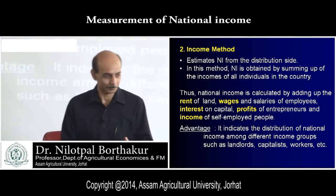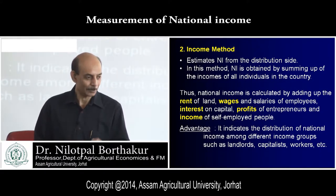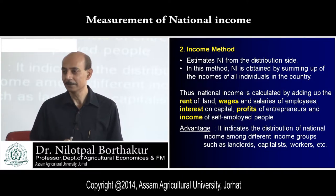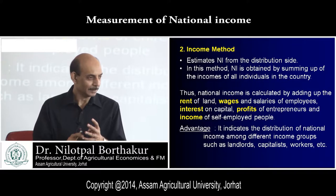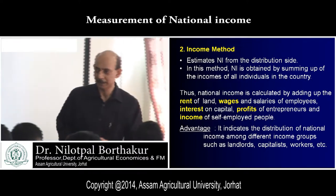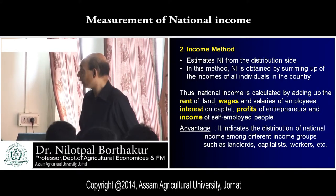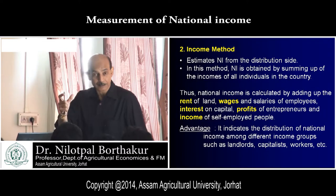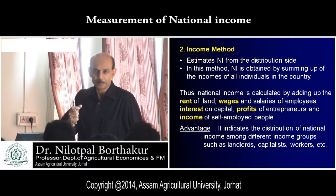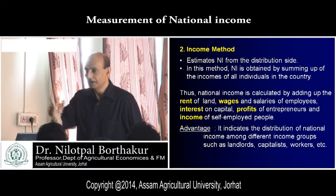There are four factors of production in an economy: land, labor, capital, and entrepreneur/organization. Whatever is produced is finally distributed over these four factors of production. The income of these four factors is rent, wages, interest, and profit. If all the land rents, all wages, all interest on capital, and all profits from entrepreneurs — as well as income of the self-employed — are added, we get the national income.